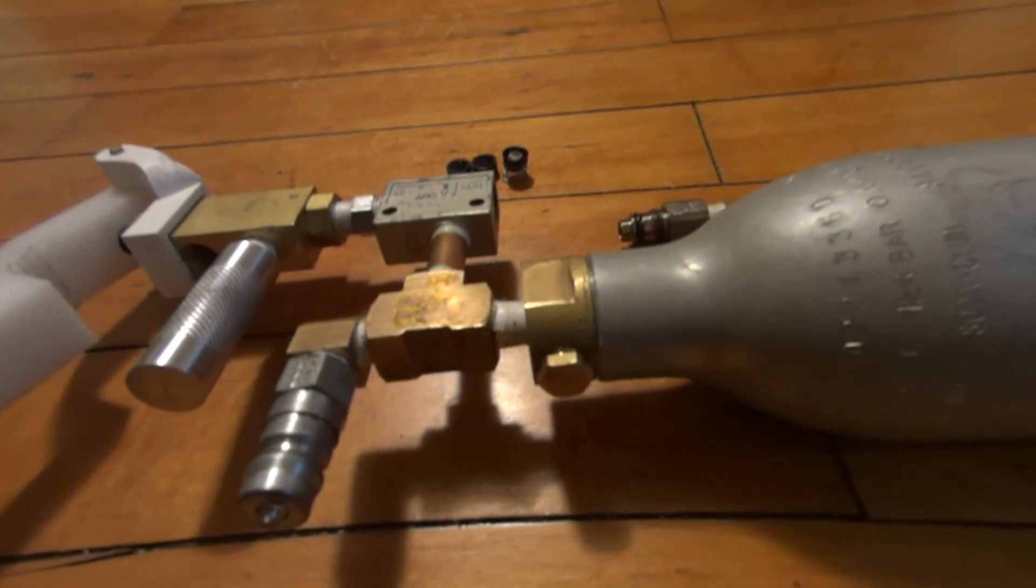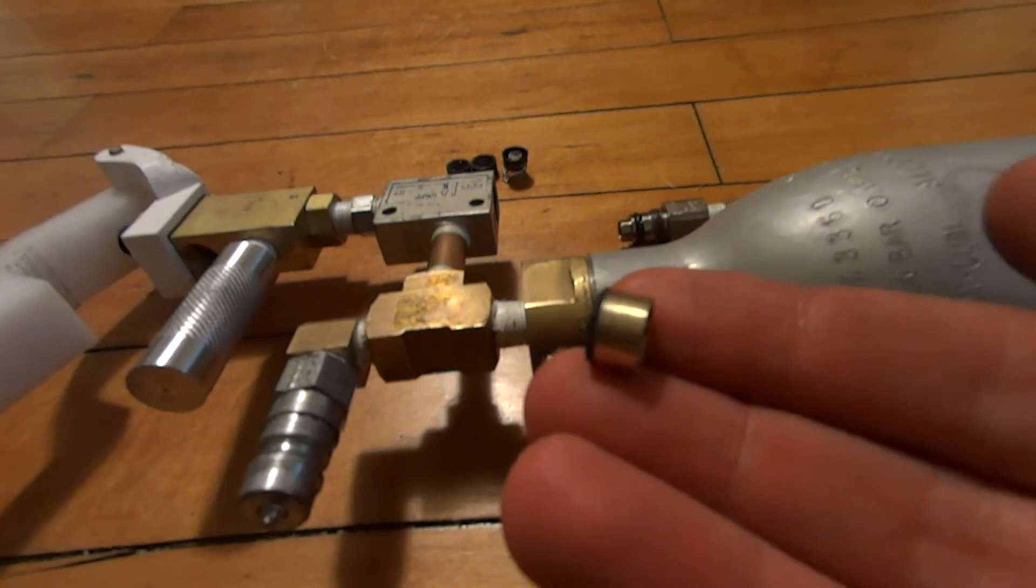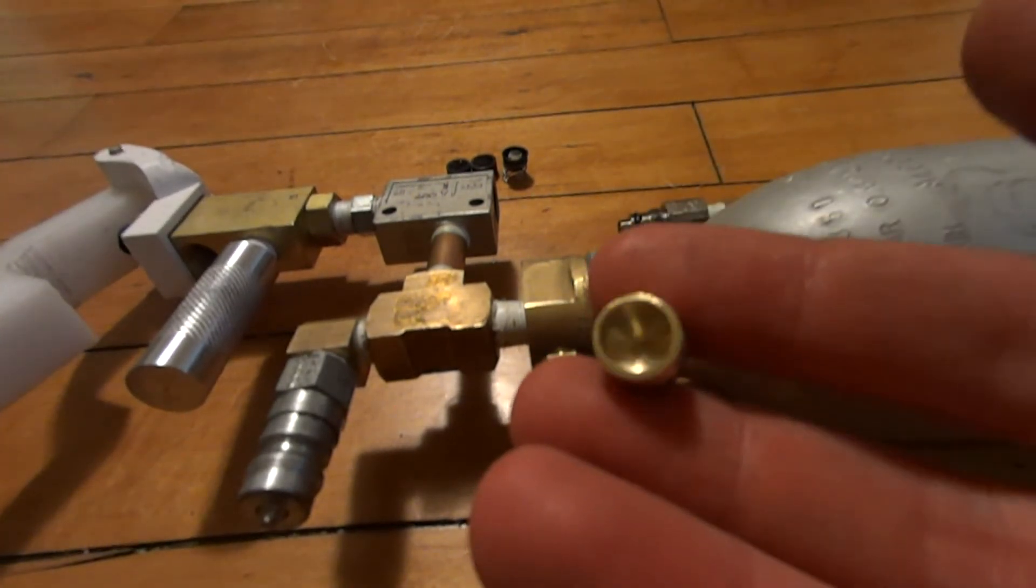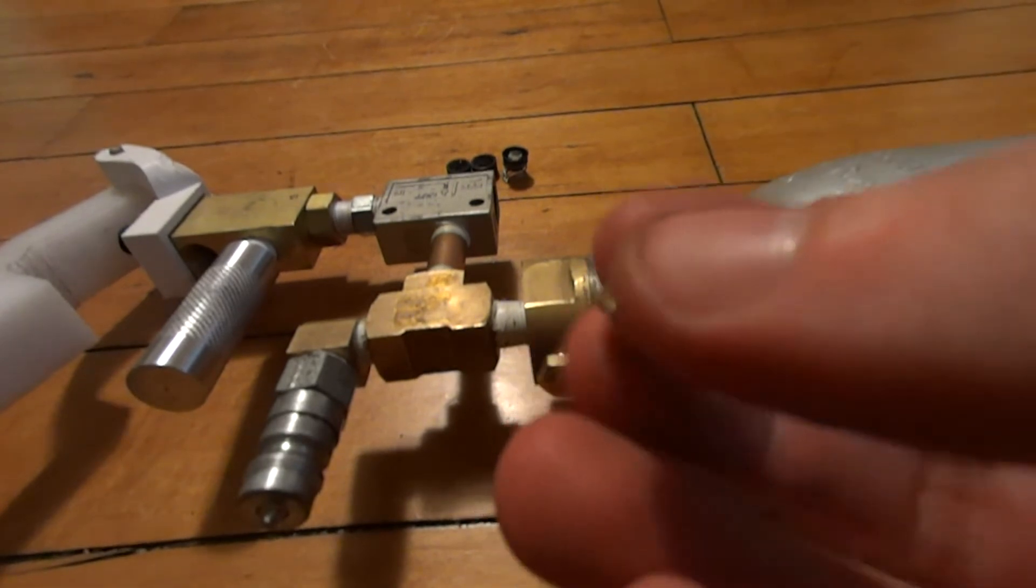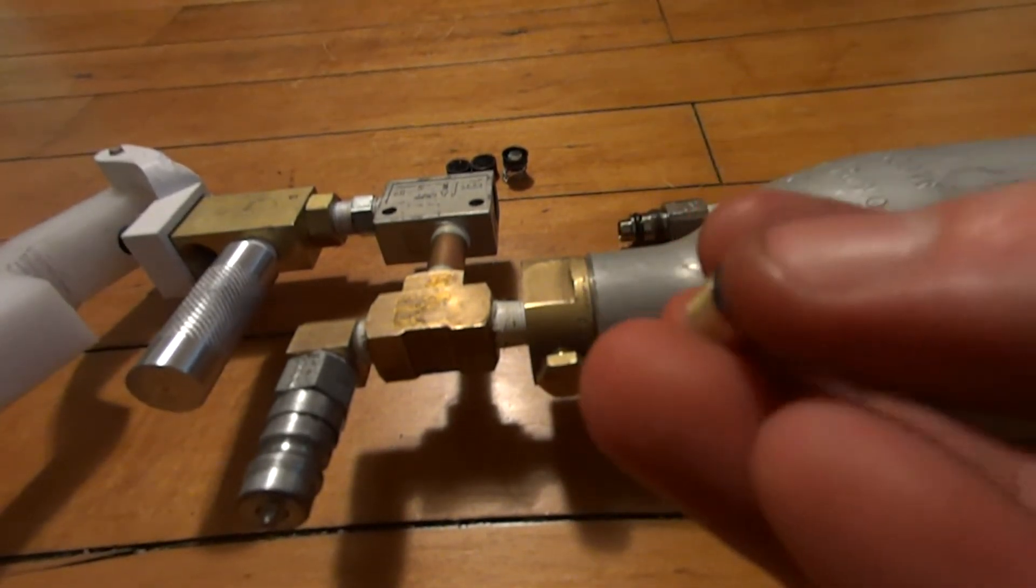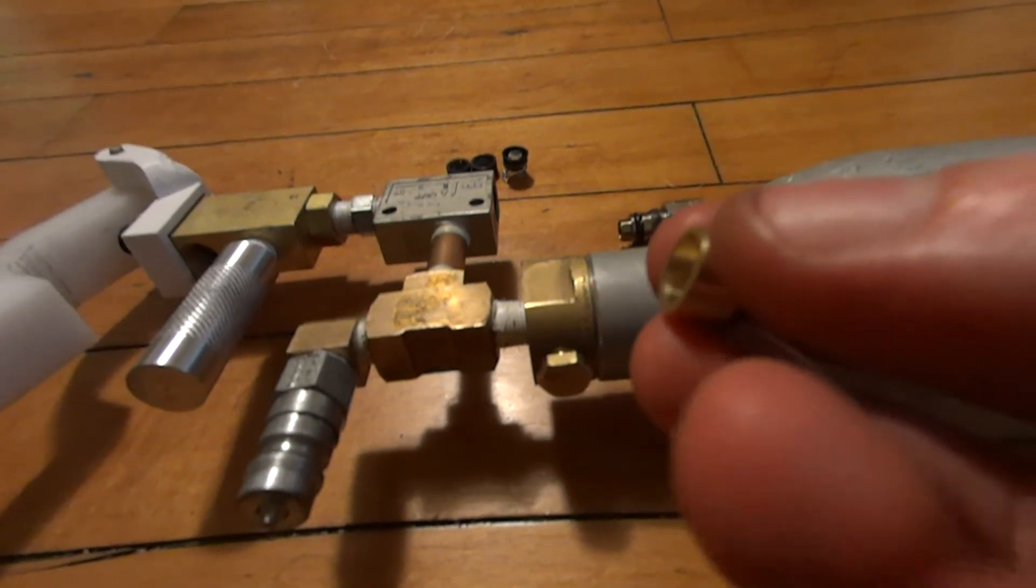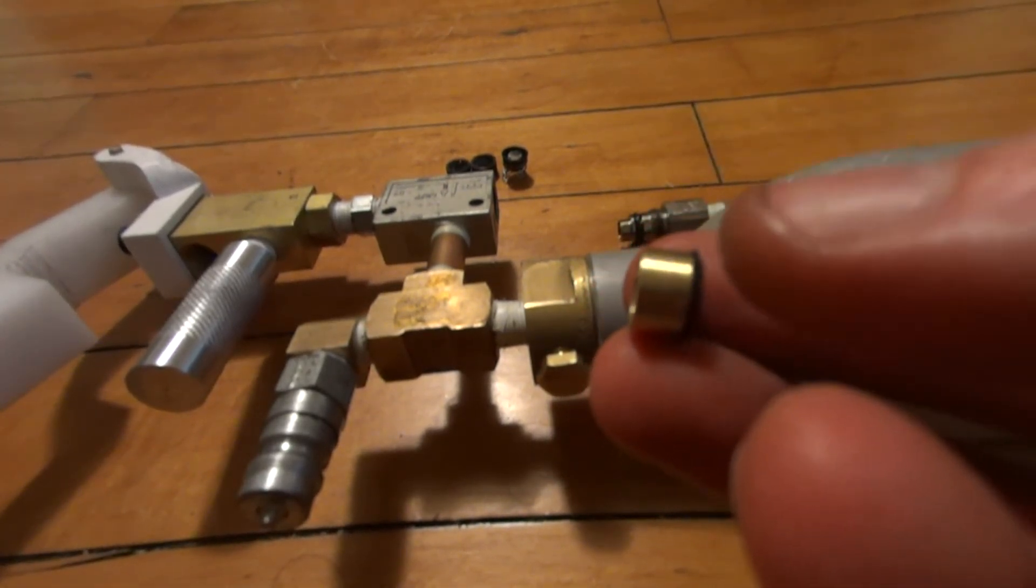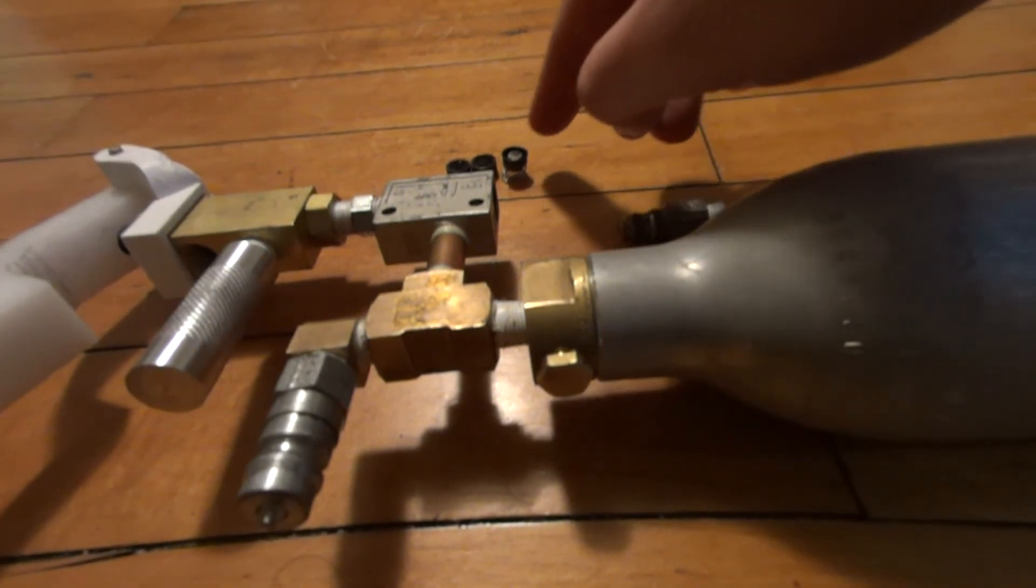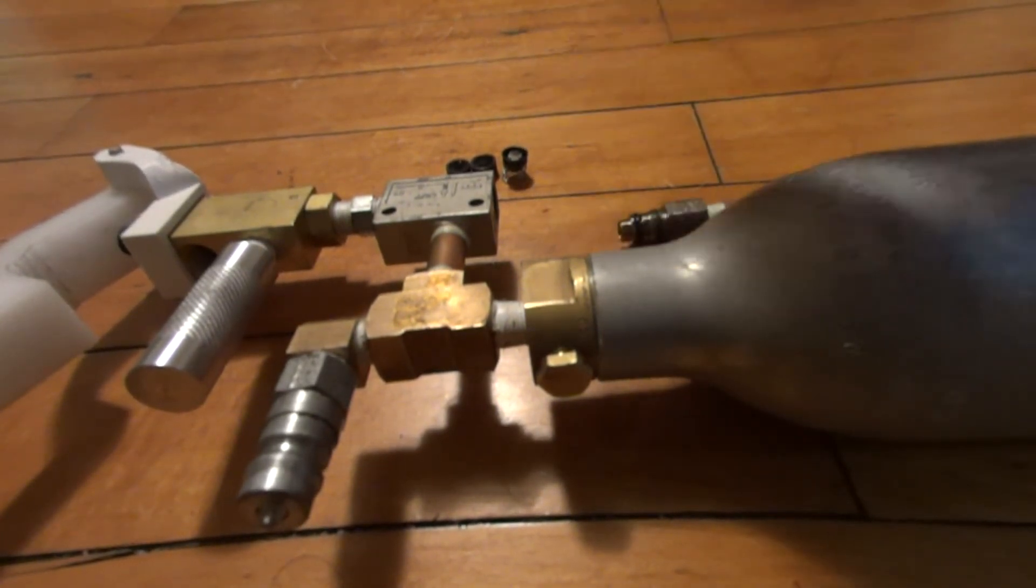So anyway, here's what I came up with. It is this. It is a piece of brass that I machined on the lathe. It fits. It's the same diameter as the widest part of the stock piston.